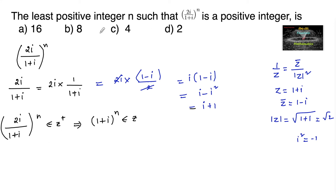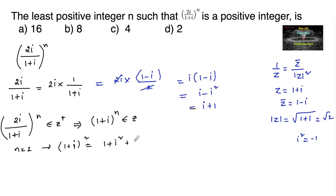Let us select from the options n = 2. We have (1+i)^2 = 1 + 2i + i² = 2i, which is not an integer — it is an imaginary number.